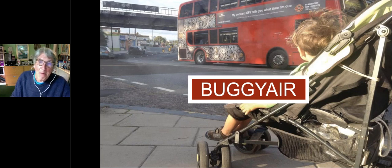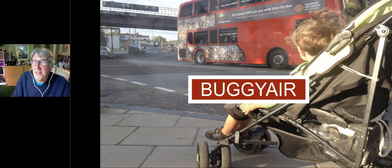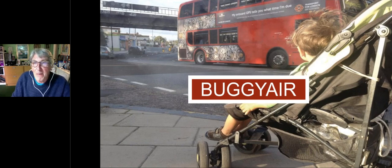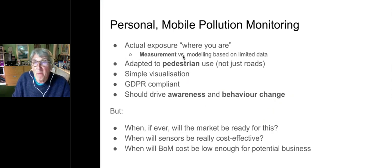Initially, we were thinking about a dirty London street. But since then, we've realized there are all manner of different ways of monitoring dirty London streets, but very few ways of monitoring any other street. So we're more interested now in provincial streets. The mission is to give people actual exposure information where they are, using measurement rather than modeling based on very limited and dispersed data.